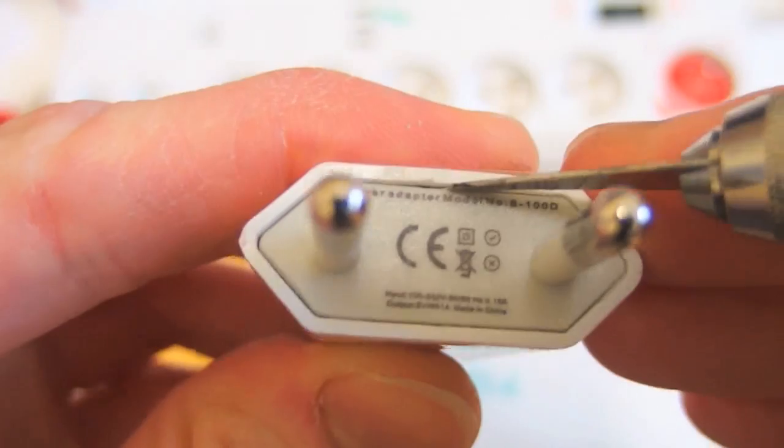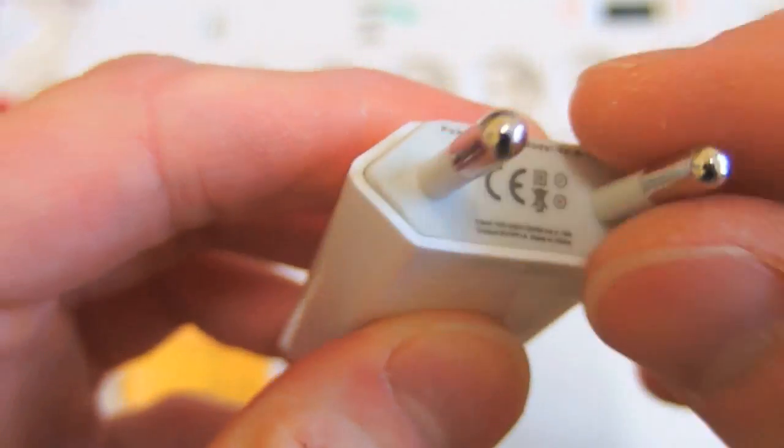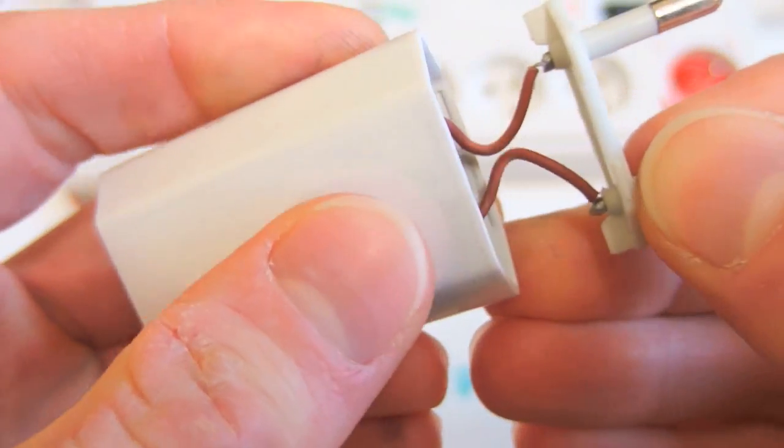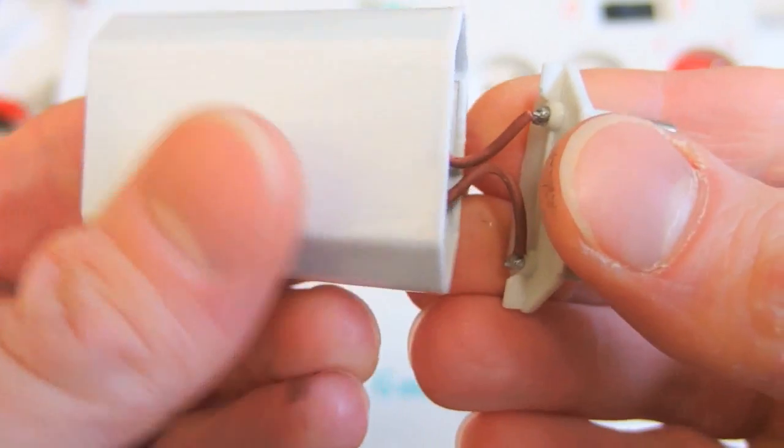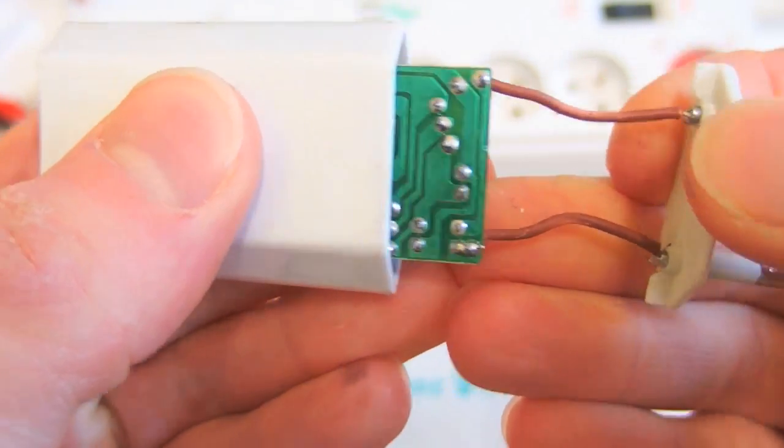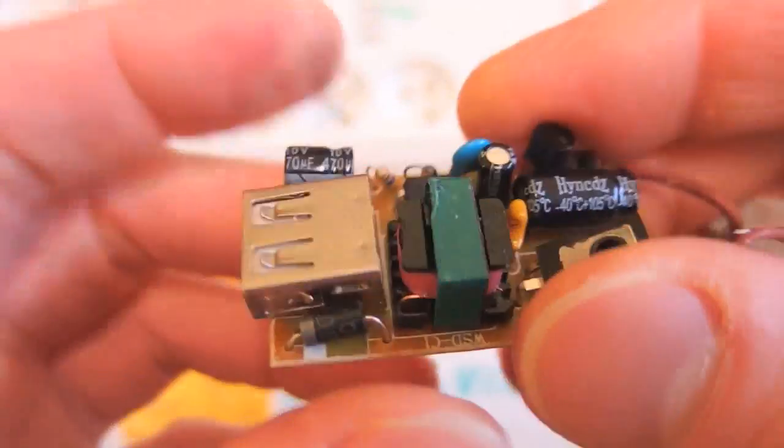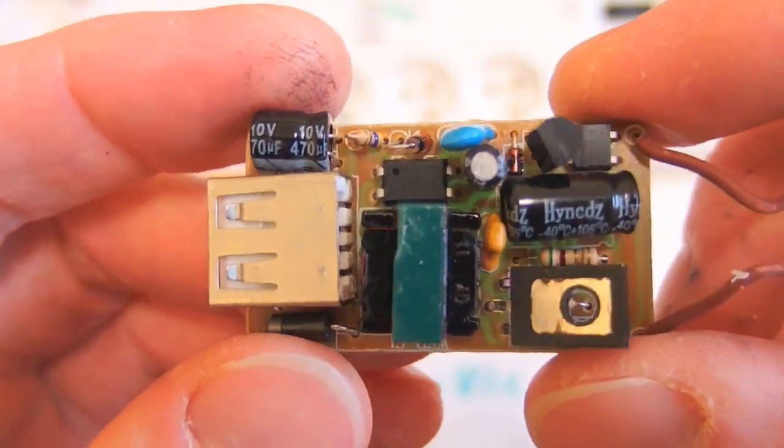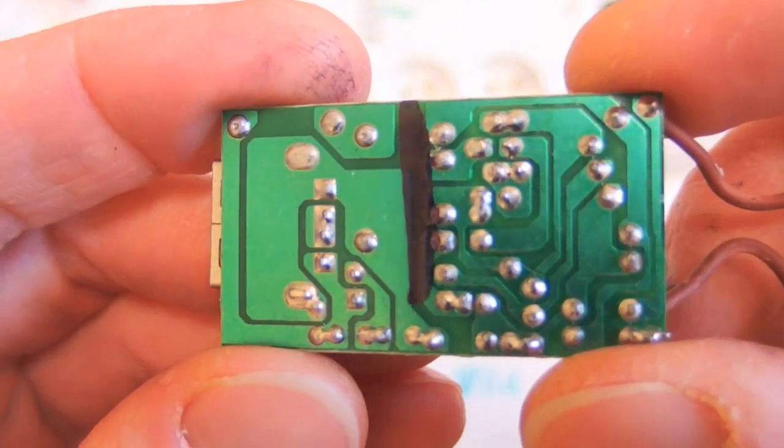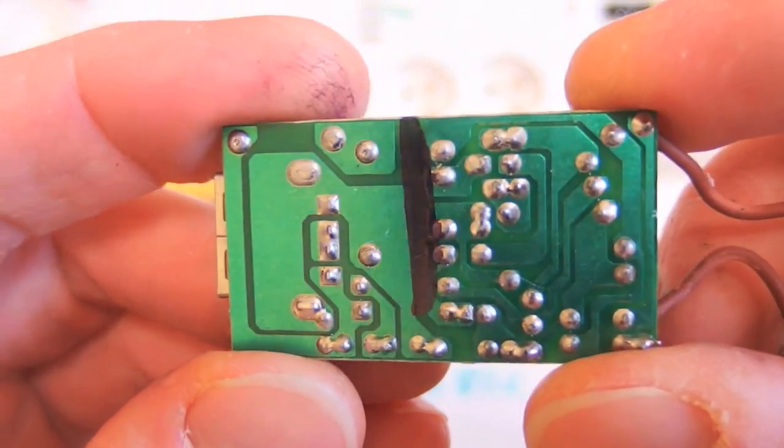And what about the Chinese copy? Let's open it up. There are wires coming from the plug. And here's the board. It's a traditional through-hole board with no SMD components on it. Single-sided board.